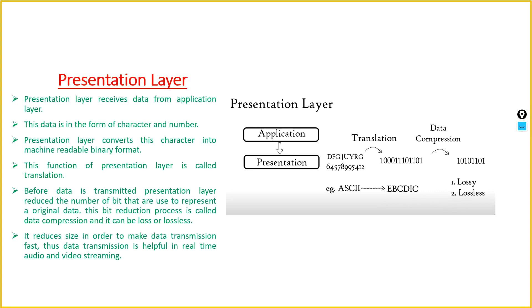Before data is transmitted further, the presentation layer reduces the number of bits used to represent the original data. This is data compression. The compression can result in data loss, making it lossy, or it can be lossless. The size is reduced in order to make data transmission faster, which is especially needed for live audio or video streaming.